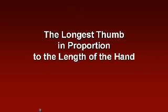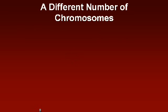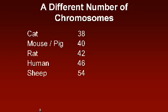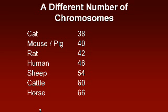Here's another difference: the thumb. You have the longest thumb in proportion to the length of the hand. Even on a biochemical basis there is a difference — a different number of chromosomes. A cat has 36 chromosomes, a mouse and a pig have 40, a rat has 42, a human has 46. But a sheep has 54, cattle have 60, and a horse has 66. So the chromosome pattern does not show an evolutionary pattern at all.